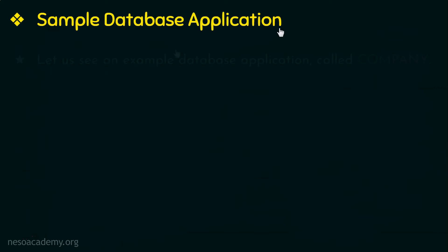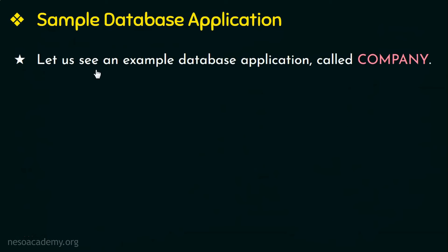Now let's look into a sample database application called company. A company database keeps track of the company's employees, departments, projects, and dependents. The first step that we learned in the database design process is requirements collection and analysis, so the requirements gathered are as follows.